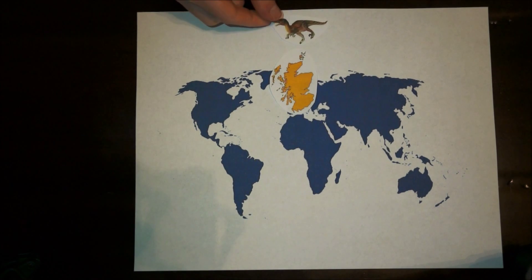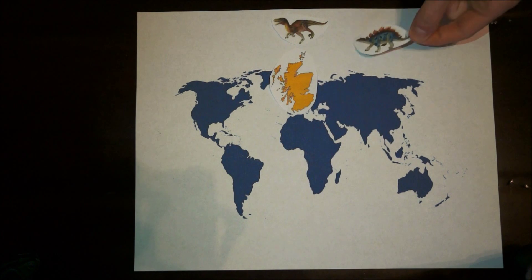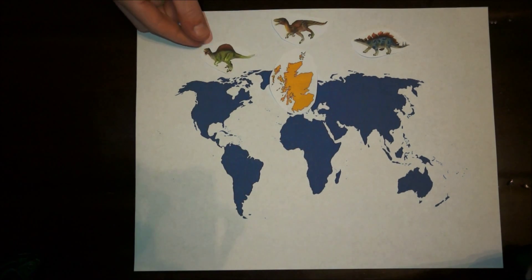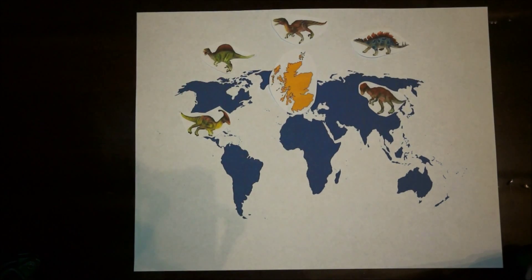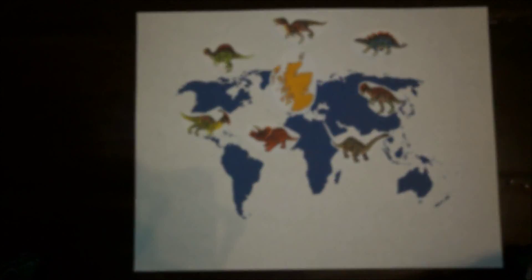Dinosaurs once inhabited Scotland, and scientists have found fossilized bones that confirm their existence. At least seven different species have been traced back to Scotland.